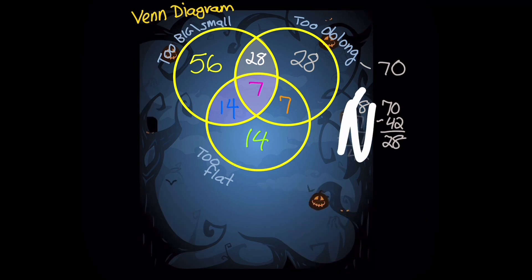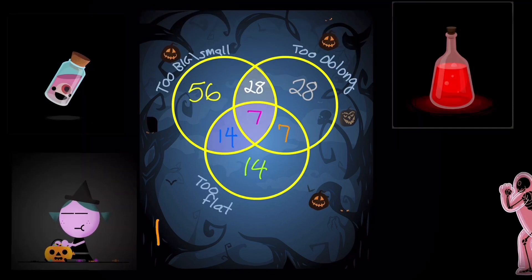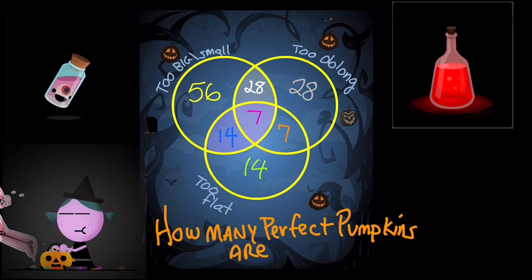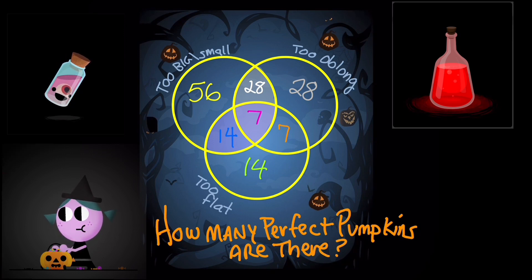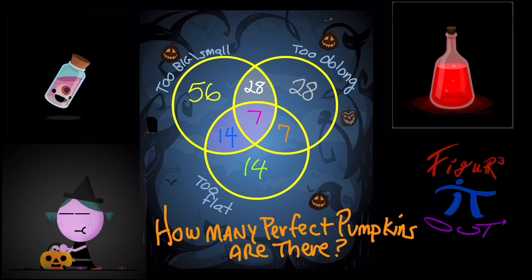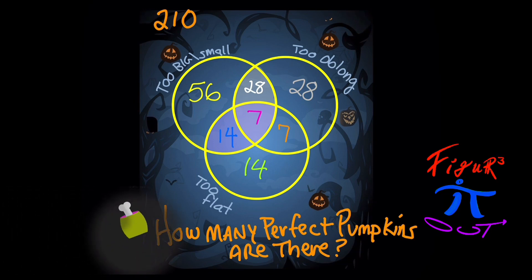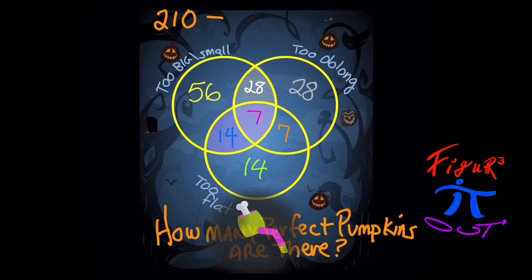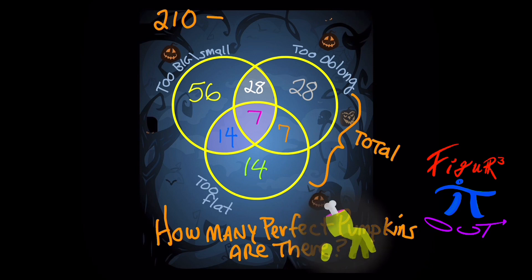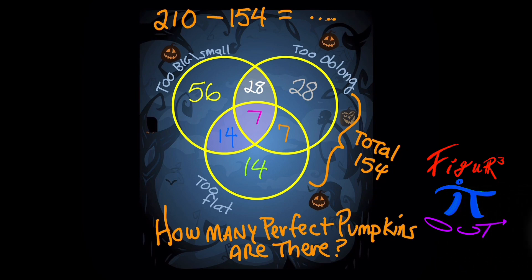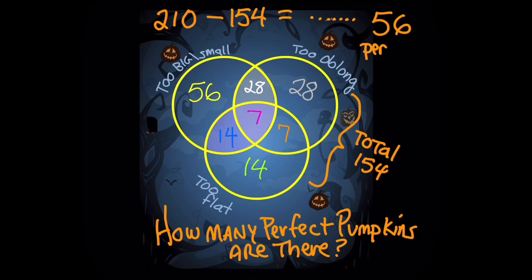So let's clear the board and try to answer the question: how many perfect pumpkins are there? Pause the video now and see if you can deduce the answer. Well, if we consider how many total pumpkins are accounted for in our Venn diagram, there are 154. Subtracting that from 210 pumpkins leaves us with 56 perfect pumpkins. How'd you do? Did you figure it out?